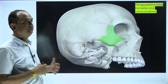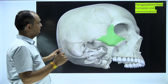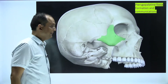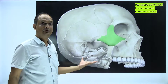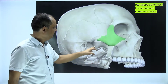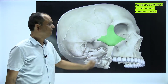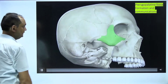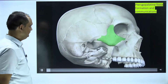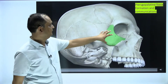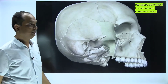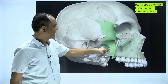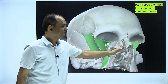Now let's look at the formation and communication visually. In the norma lateralis, after removing the mandible, you can appreciate the infratemporal fossa. We will now remove bones one by one to locate the pterygopalatine fossa. First, removing the zygomatic bone — deep to it you can see the greater wing of the sphenoid and the maxilla.